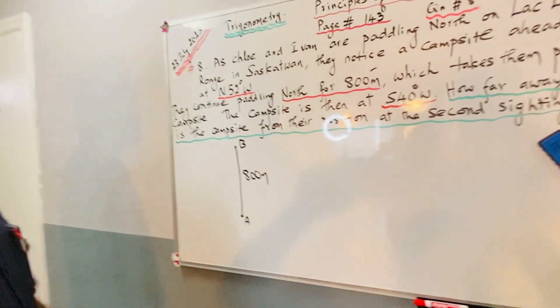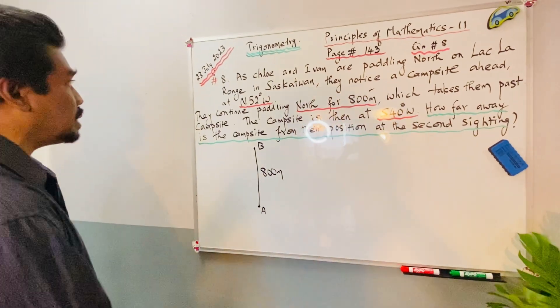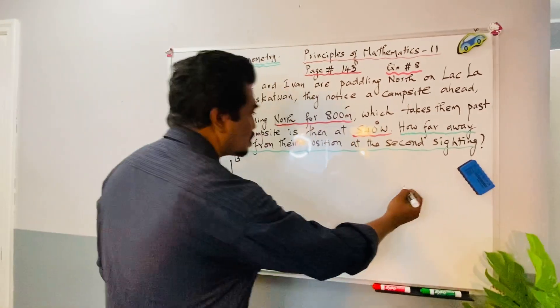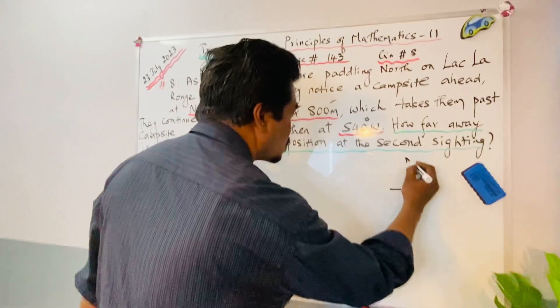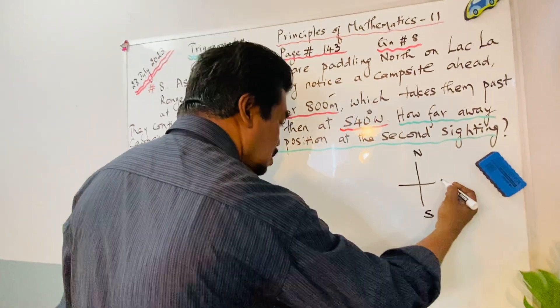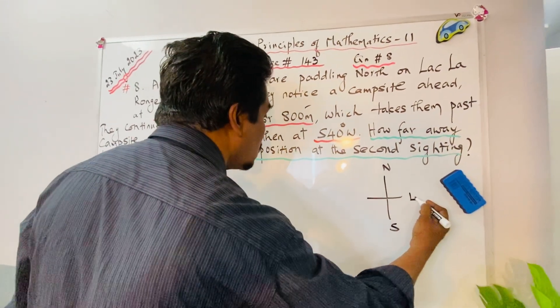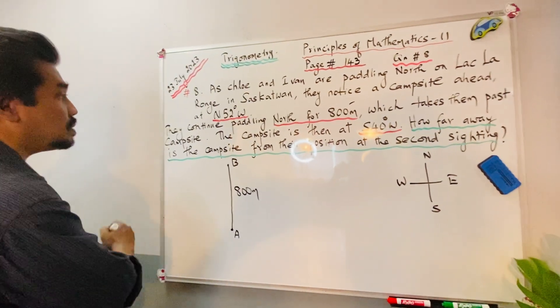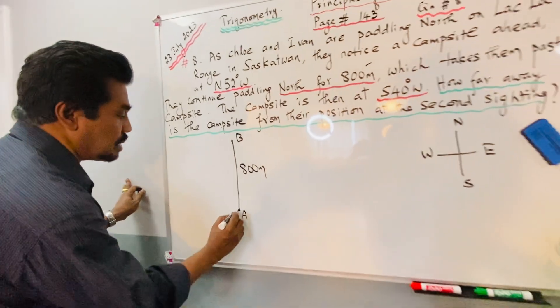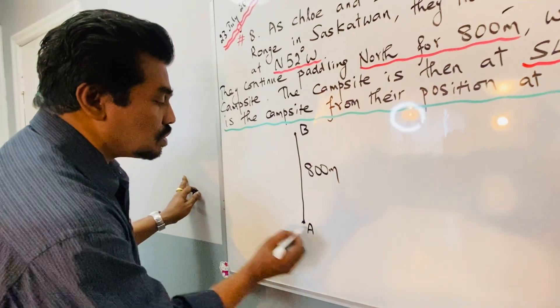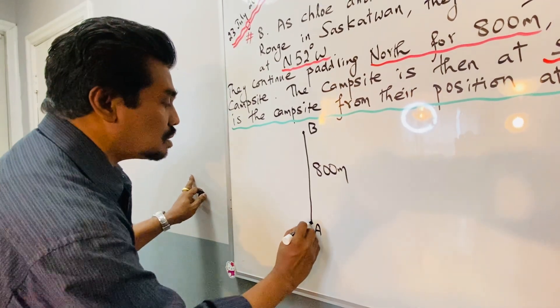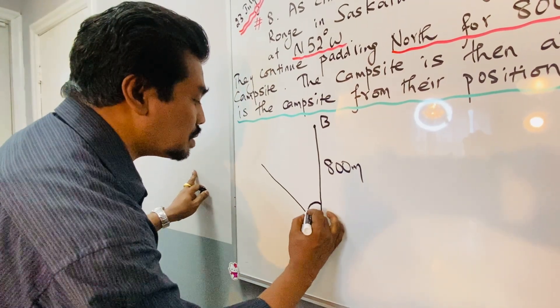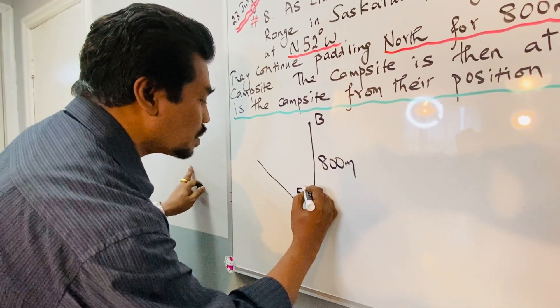Now they notice a campsite ahead. From north, first I'll give the direction: this is north, this is south, this is east, and this is west. From north 52 degrees towards west - we know this is 90 degrees - so I can put approximately this one as 52 degrees.